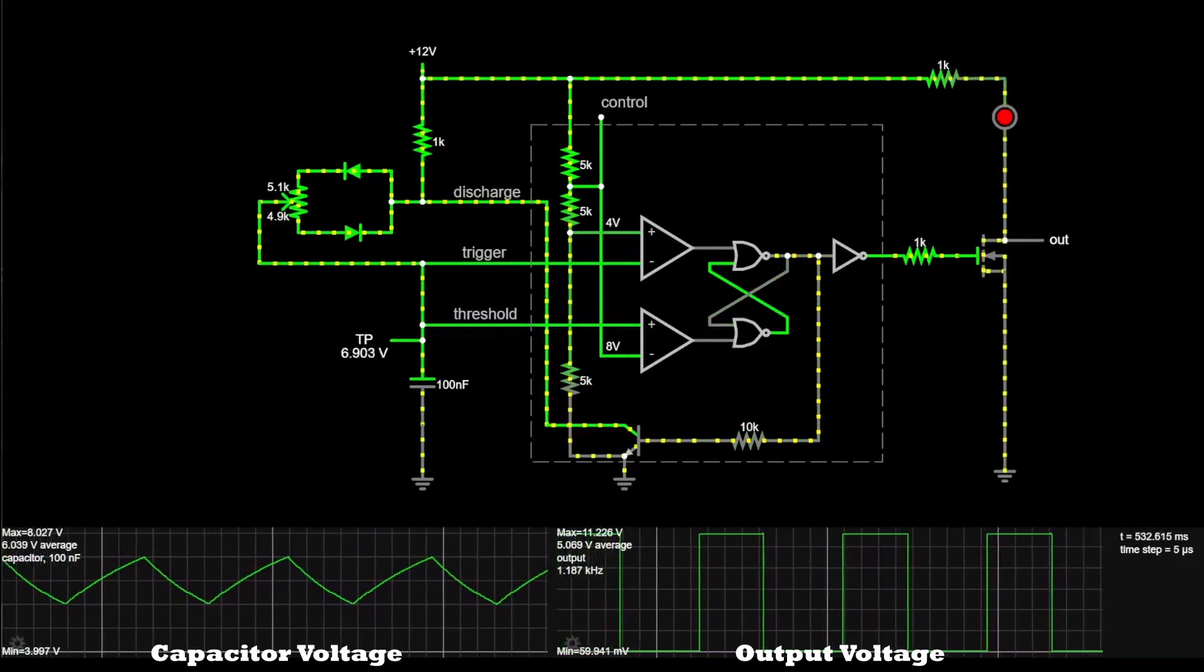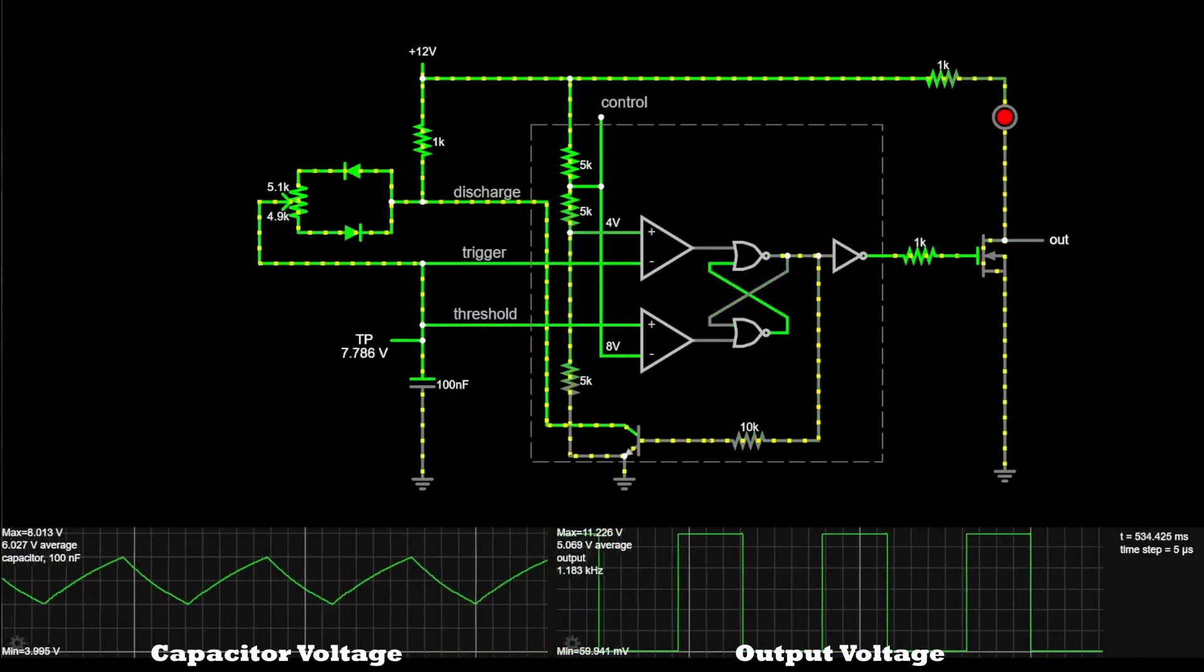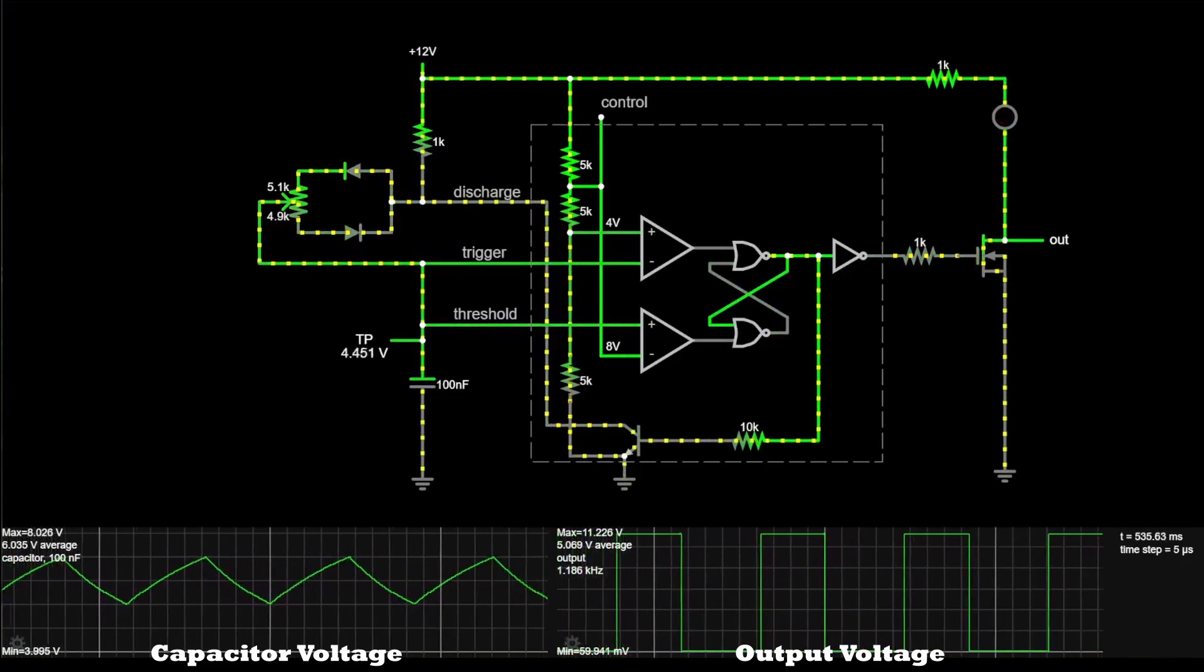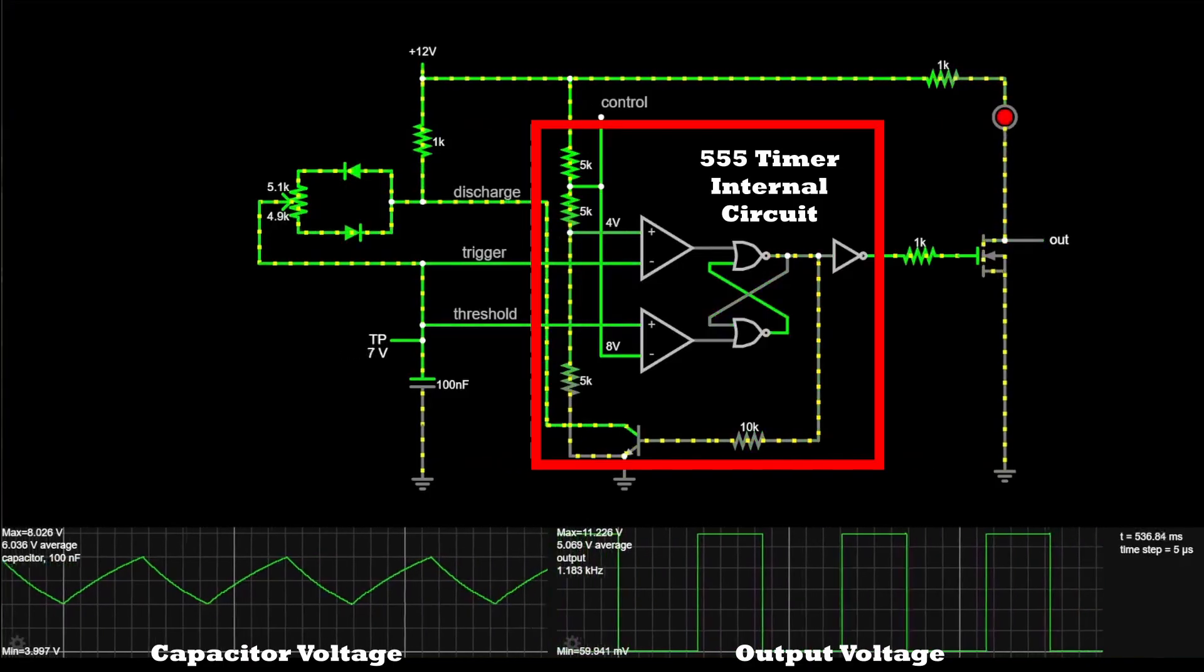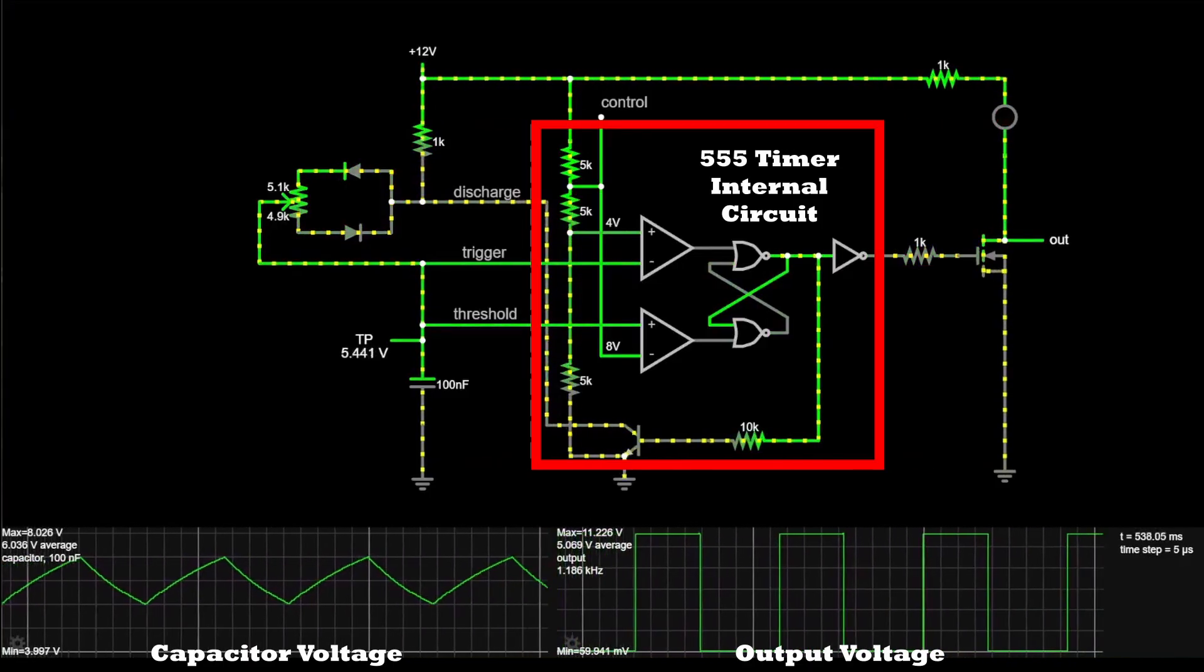Now let's take a closer look at the circuit schematic. Here I have a simulation of the circuit which will show how the current flows. The internal operation of the 555 timer IC is also shown here.